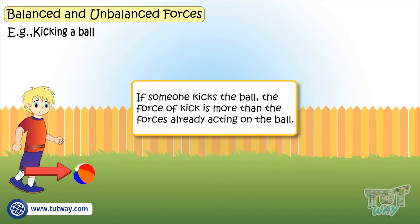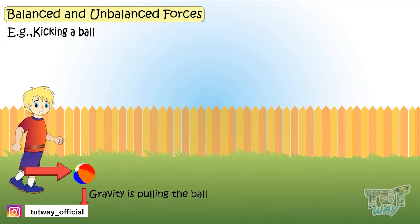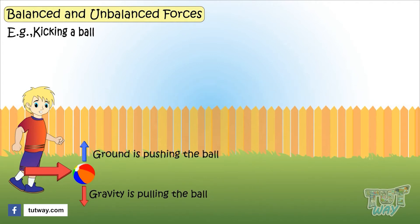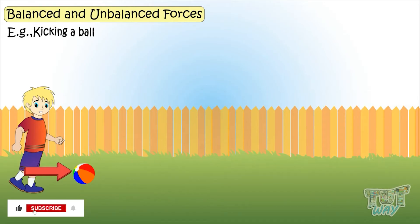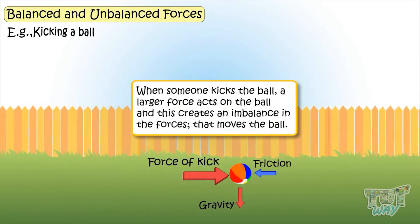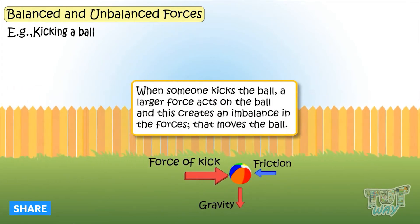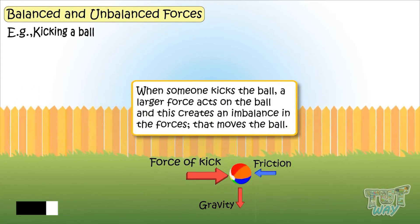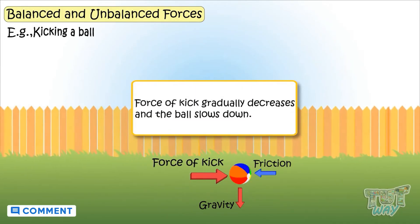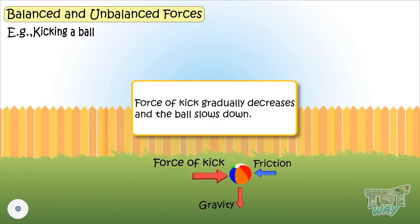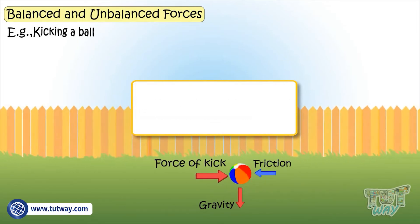If someone kicks the ball, the force of the kick is more than the forces already acting on the ball. Gravity is pulling the ball down and the ground is pushing the ball up — both forces were equal and opposite, that is, balanced. But when someone kicks it, a larger force acts on the ball, creating an imbalance in the forces that moves the ball.